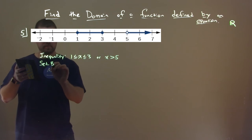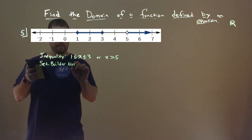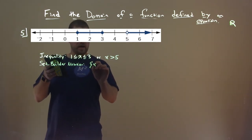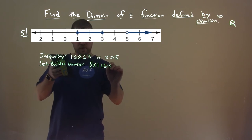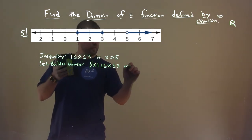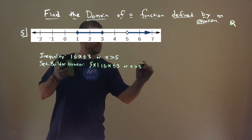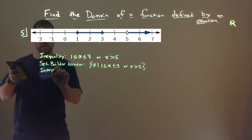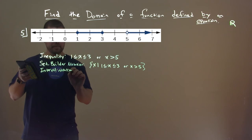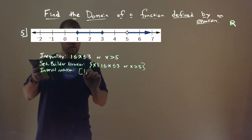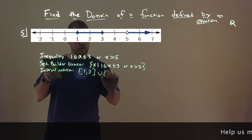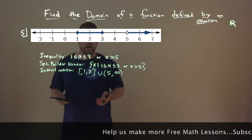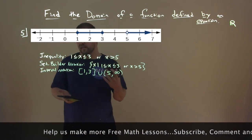In set builder notation: all values of x such that 1 is less than or equal to x, which is less than or equal to 3, or x is greater than 5. In interval notation: brackets from 1 to 3, union, parenthesis 5 to infinity.